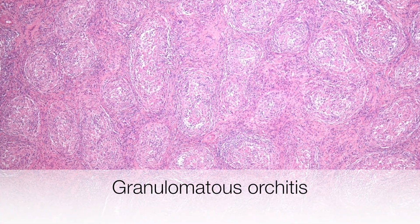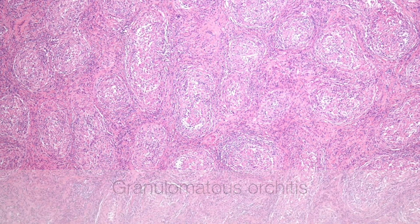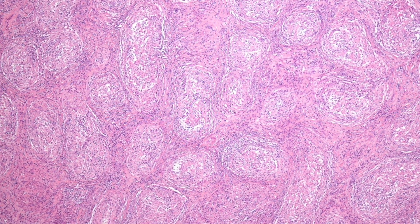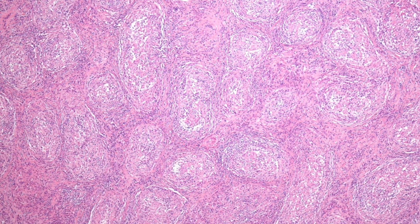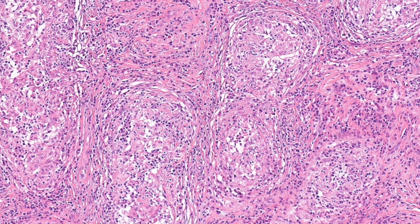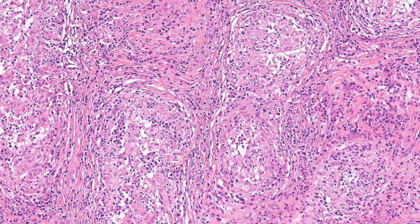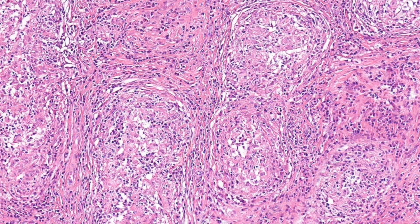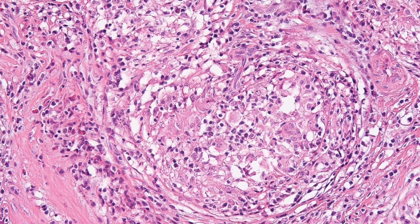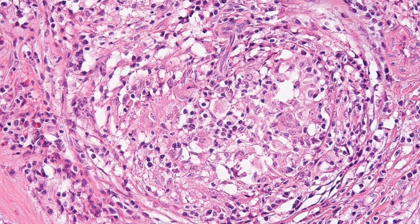This is the low power view of granulomatous orchitis and you can see that the normal tubular architecture is retained, but on higher power the content of the tubules is anything but normal and the germ cells have been replaced by inflammatory cells including macrophages, epithelioid cells, lymphocytes and plasma cells.